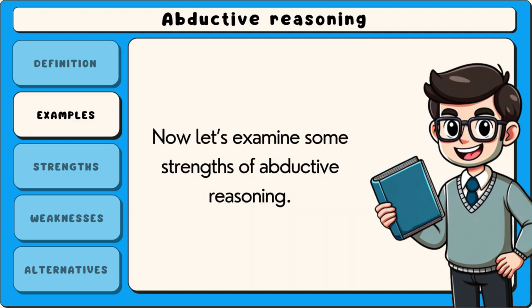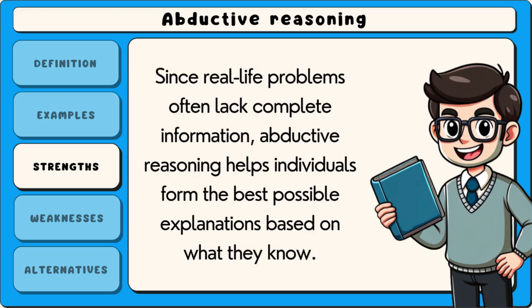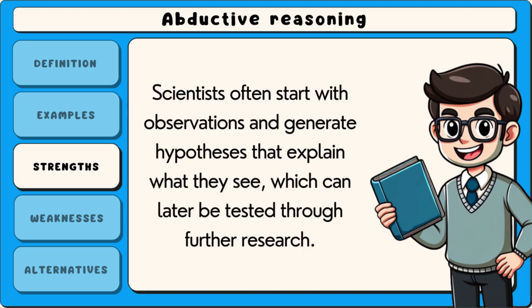Now let's examine some strengths of abductive reasoning. One strength is that it allows people to make quick and reasonable decisions in uncertain situations. Since real-life problems often lack complete information, abductive reasoning helps individuals form the best possible explanations based on what they know. Another strength is that it plays a key role in scientific discovery — scientists often start with observations and generate hypotheses that explain what they see.